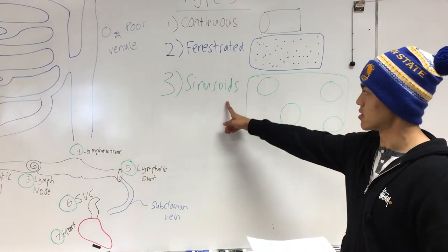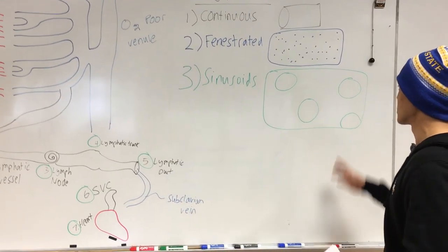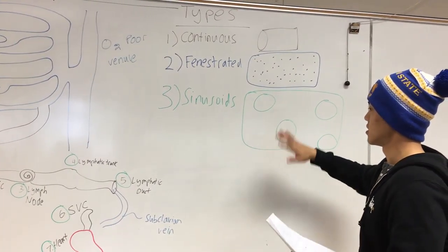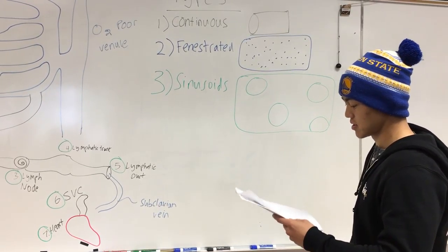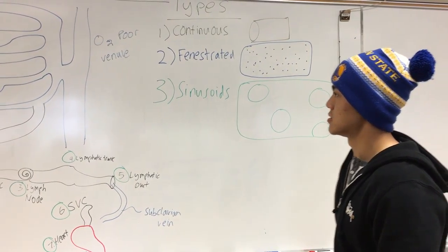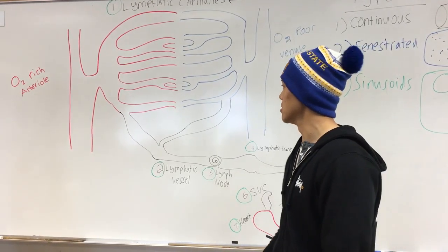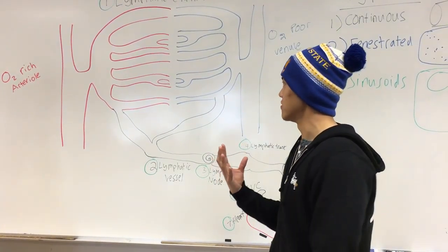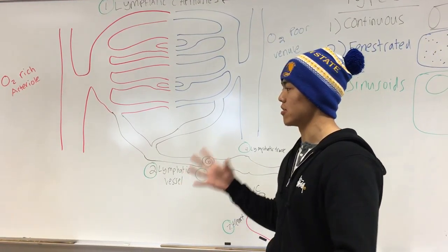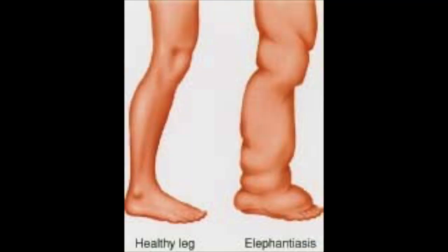The third type, for the largest molecules, is sinusoids. Sinus means pool, so I like to think of it as a sponge with holes for absorption. It's for large proteins and is found in the skeletal muscles. The lymphatic system basically helps bring back the leaked nutrients to the heart. If the lymphatic system is dysfunctioning, all the fluids will drain to the bottom and diseases such as elephantiasis could occur.